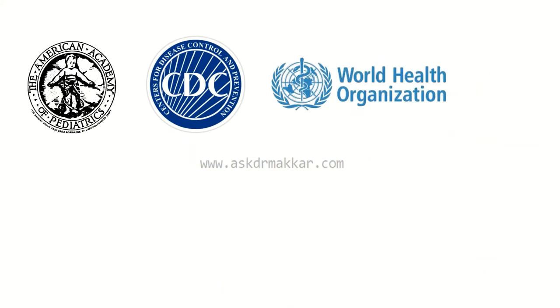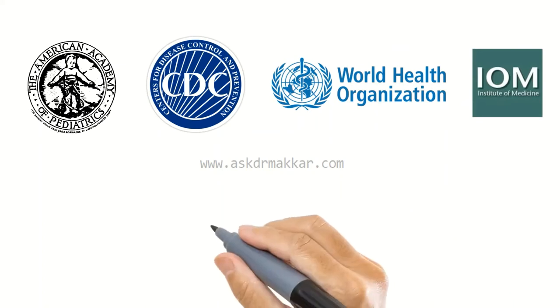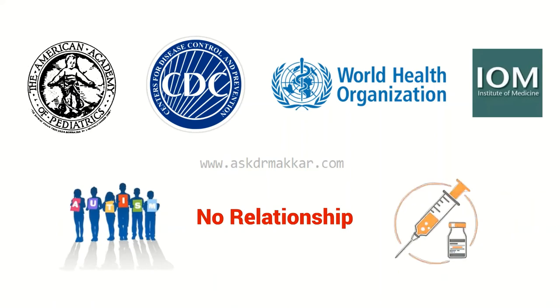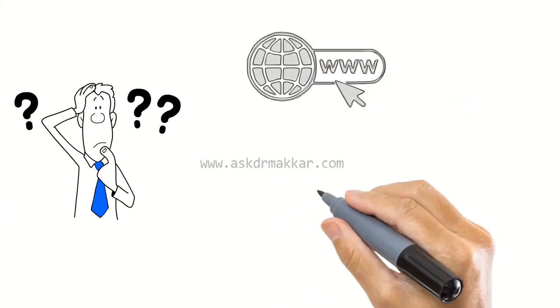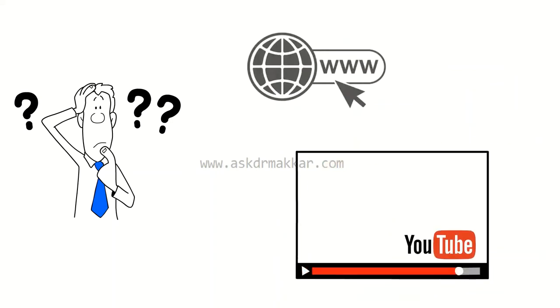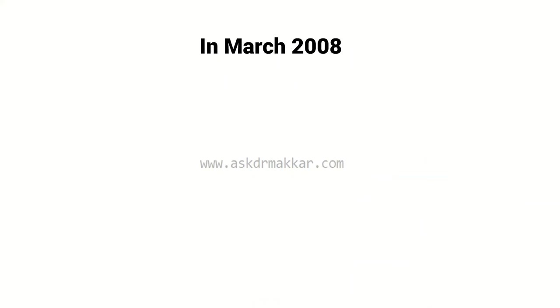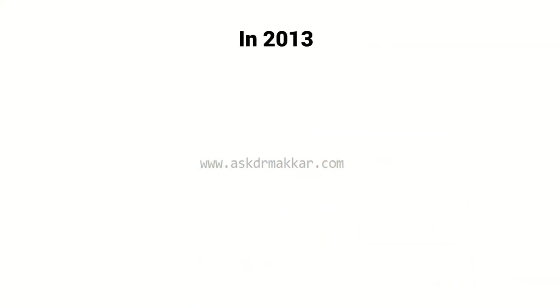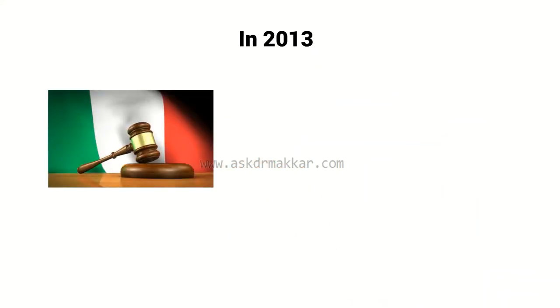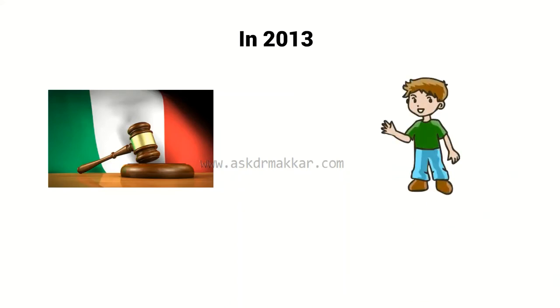The American Academy of Pediatrics, the CDC, the World Health Organization, and the Institute of Medicine all agree that there is probably no relationship between autism and vaccines. But many websites provide information about vaccine damage in kids, and YouTube has dozens of testimonial videos from parents who believe their children developed autism after vaccination. In March 2008, federal officials said a Georgia girl was entitled to compensation because vaccines may have aggravated an underlying condition causing autism-like symptoms. In 2013, an Italian court also ruled in favor of the Bocca family, whose 9-year-old son became autistic after receiving the MMR vaccine.